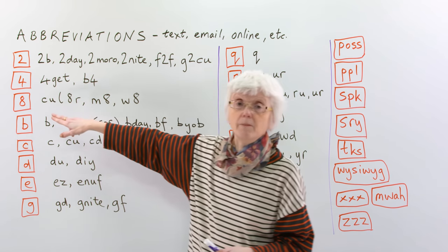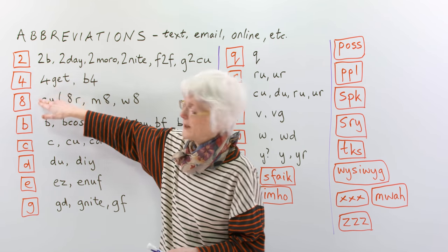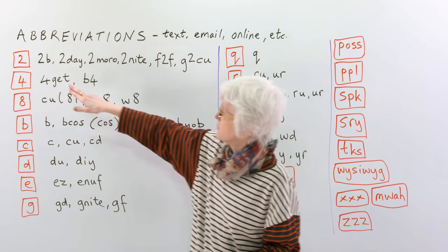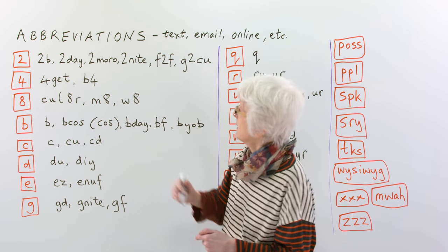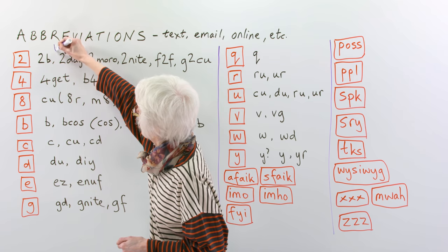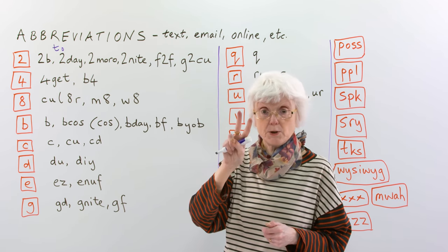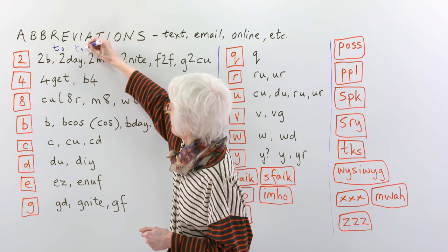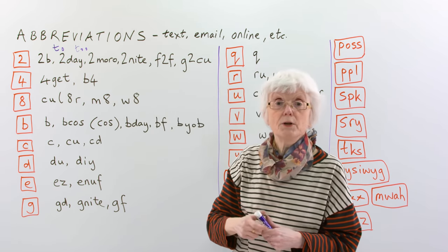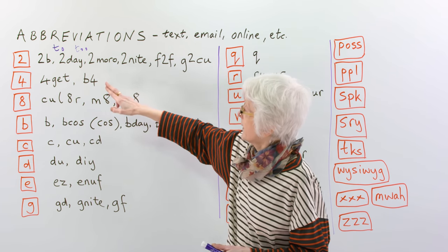So, some of these shortened forms are based on numbers. Because if you have this number, two, it can also mean the word T-O, as well as the number two, T-O, or T-double-O, so it's often used to represent one of those words.